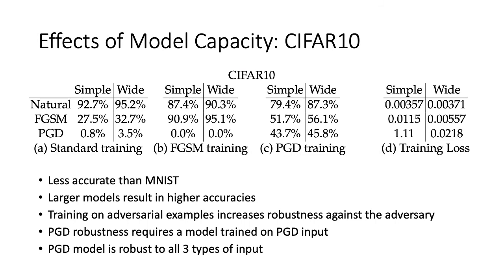These are the results for the CIFAR-10 dataset. The accuracies are lower than their MNIST counterparts, but we notice the same trends: larger models have higher accuracies, training on adversarial examples increases robustness against these adversaries, robustness against PGD requires a model trained on PGD input, and the PGD model is robust to all three types of input.